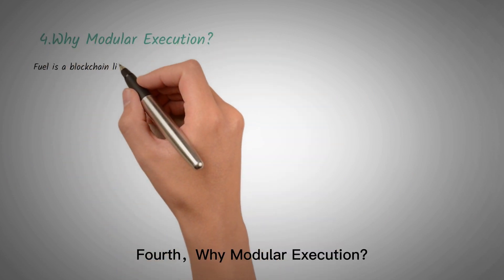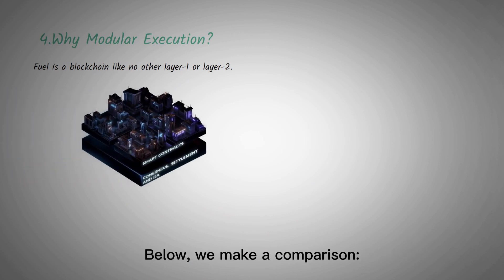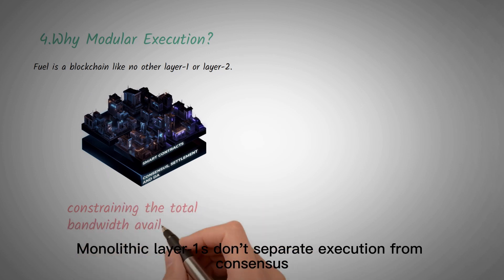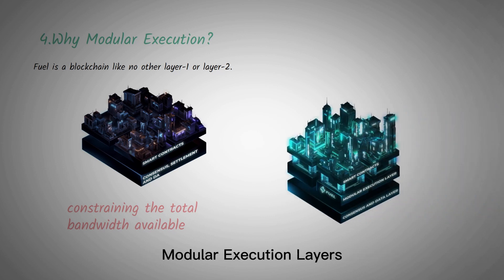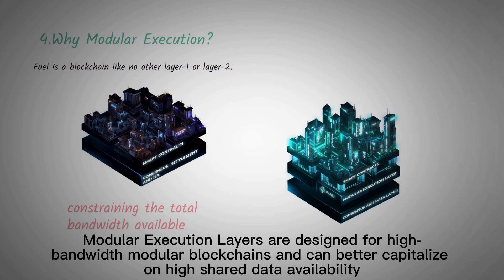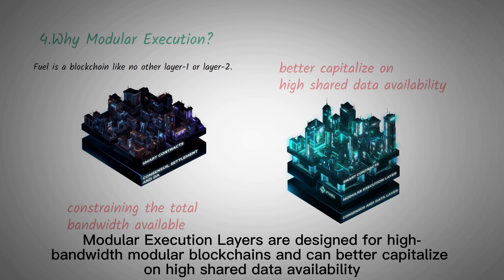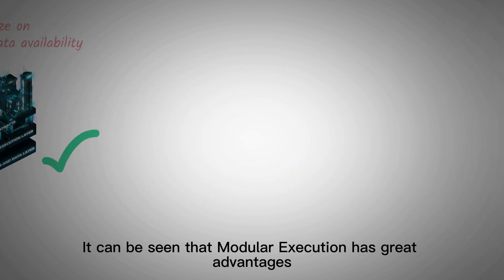Fourth, why modular execution? Fuel is a blockchain like no other layer 1 or layer 2. Monolithic layer 1s don't separate execution from consensus, settlement, and data layers, constraining the total bandwidth available. Modular execution layers are designed for high-bandwidth modular blockchains and can better capitalize on high shared data availability. It can be seen that modular execution has great advantages.